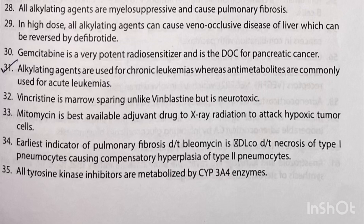Mitomycin is the best available adjuvant drug to X-ray radiation to attack hypoxic tumor cells. The earliest indicator of pulmonary fibrosis due to bleomycin is a decrease in DLCO, due to necrosis of type 1 pneumocytes causing compensatory hyperplasia of type 2 pneumocytes. All tyrosine kinase inhibitors are metabolized by CYP3A4 enzymes.